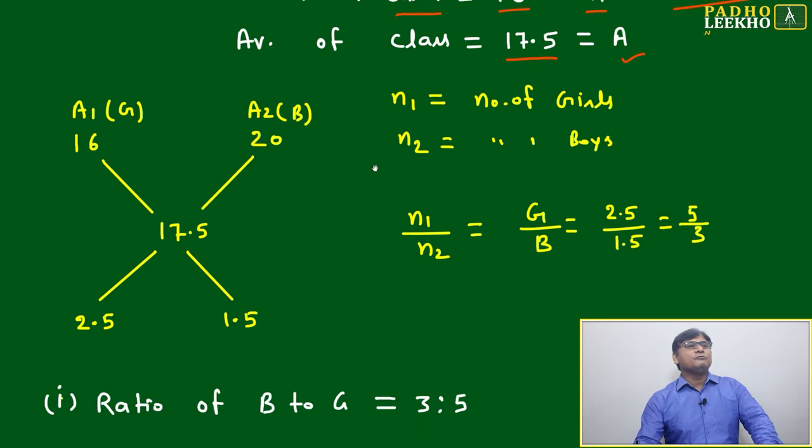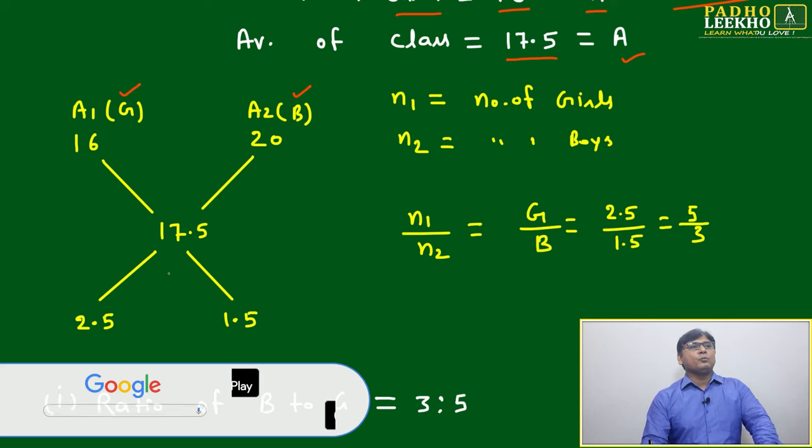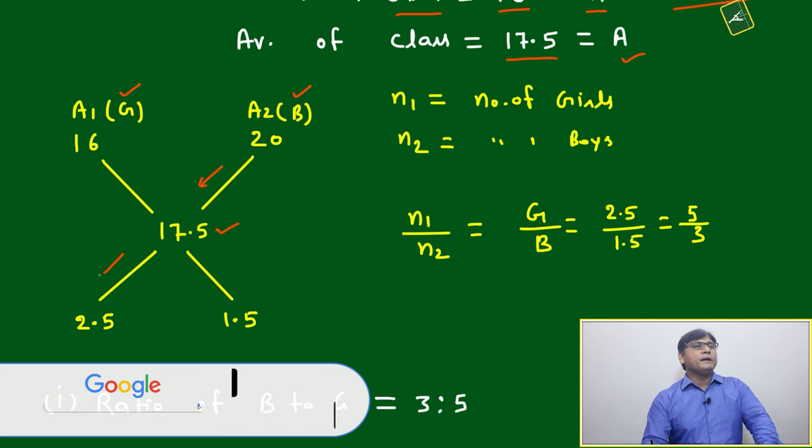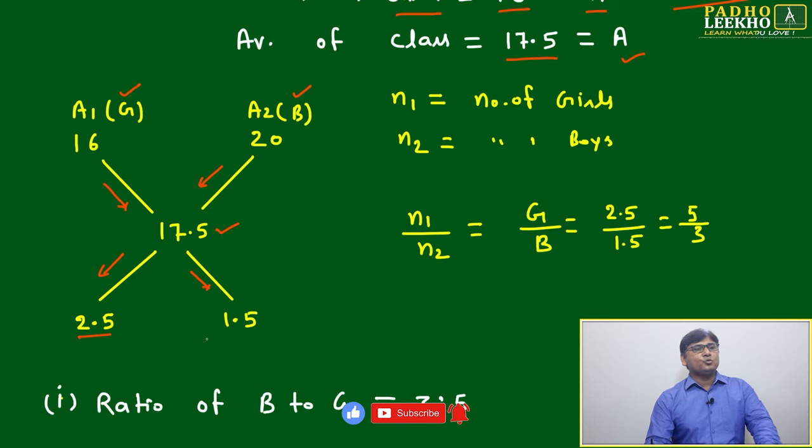This same data we can write in form of allegation. Then this will become your average of girls, that is your 16. This is your 20, average of boys. And total average, weighted average, is 17.5. We will take the difference in same way. Then here it will come 20 minus 17.5, that is 2.5. Here it will come 17.5 minus 16, that is 1.5.